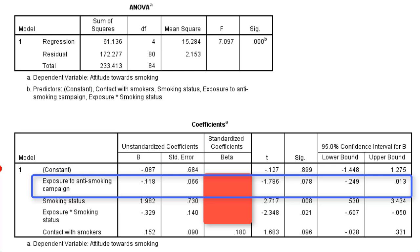For non-smokers, there is a slightly negative effect of exposure on attitude towards smoking. The 95% confidence interval tells us it is most likely between minus 0.25 and plus 0.1, so it includes 0. The statistical test is not significant at the 0.05 level, but the confidence interval suggests it is quite likely that the effect is negative in the population.